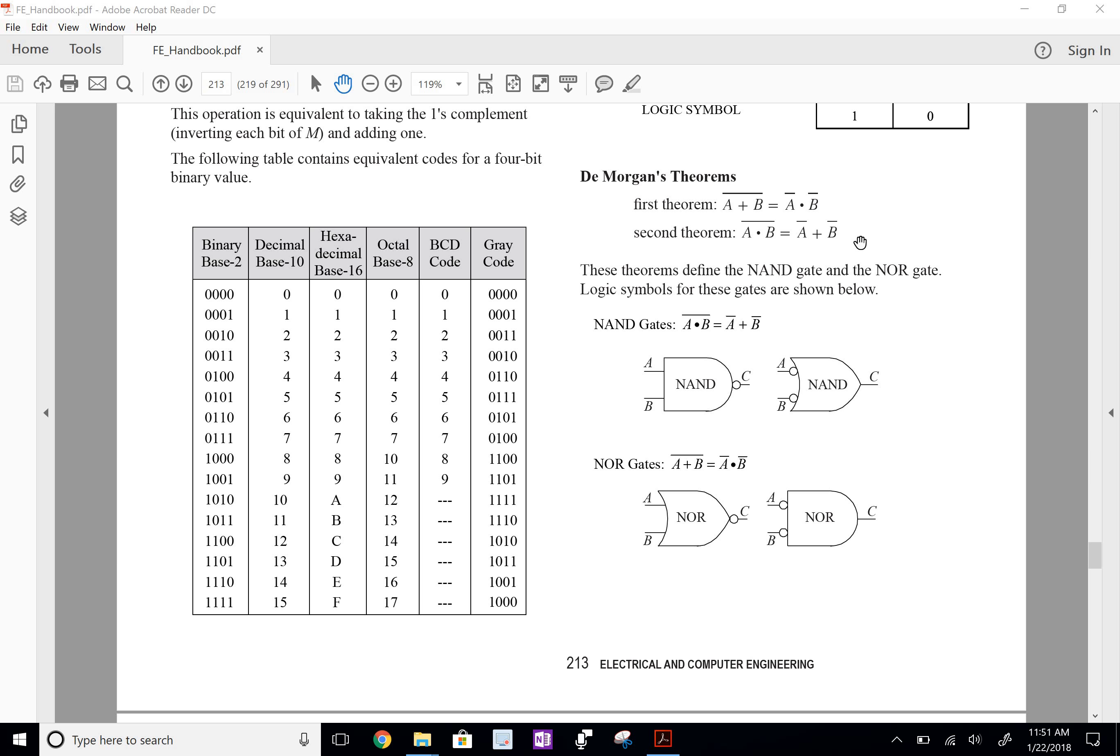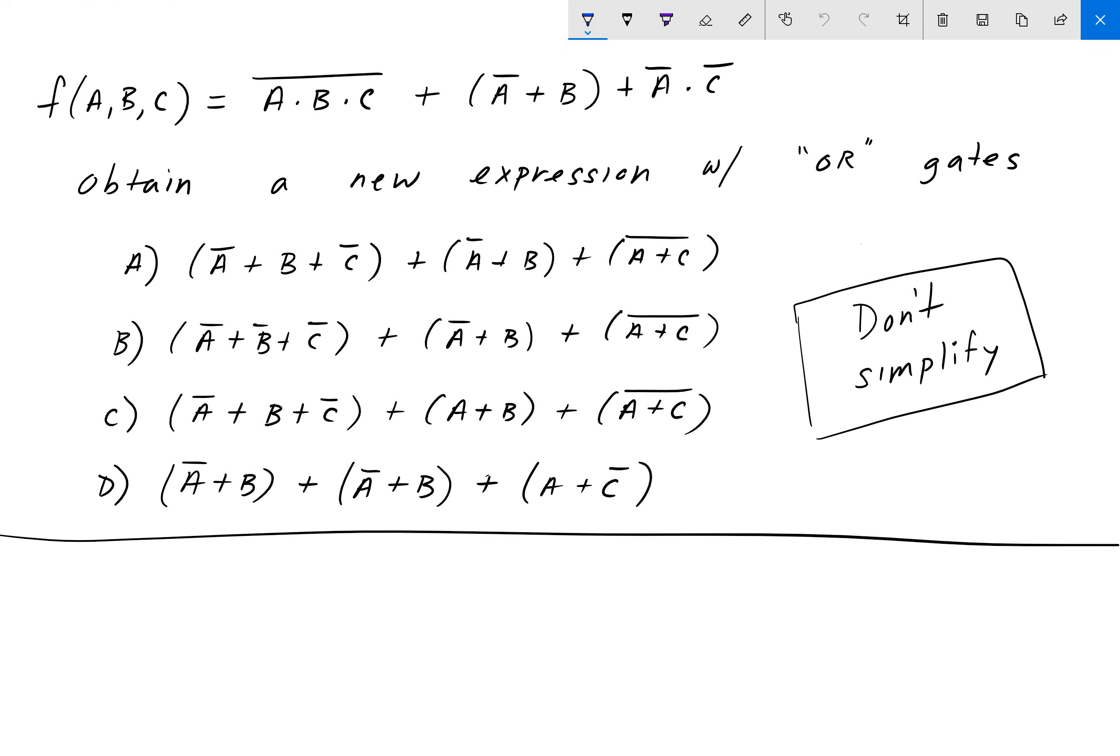So if we go back to our problem here we want to turn this first expression from a multiplication problem to an addition problem. Recall that OR gates are associated with addition and AND gates are associated with multiplication. So we want to turn this all into an addition problem. And we also want to convert the third term here using DeMorgan's laws.